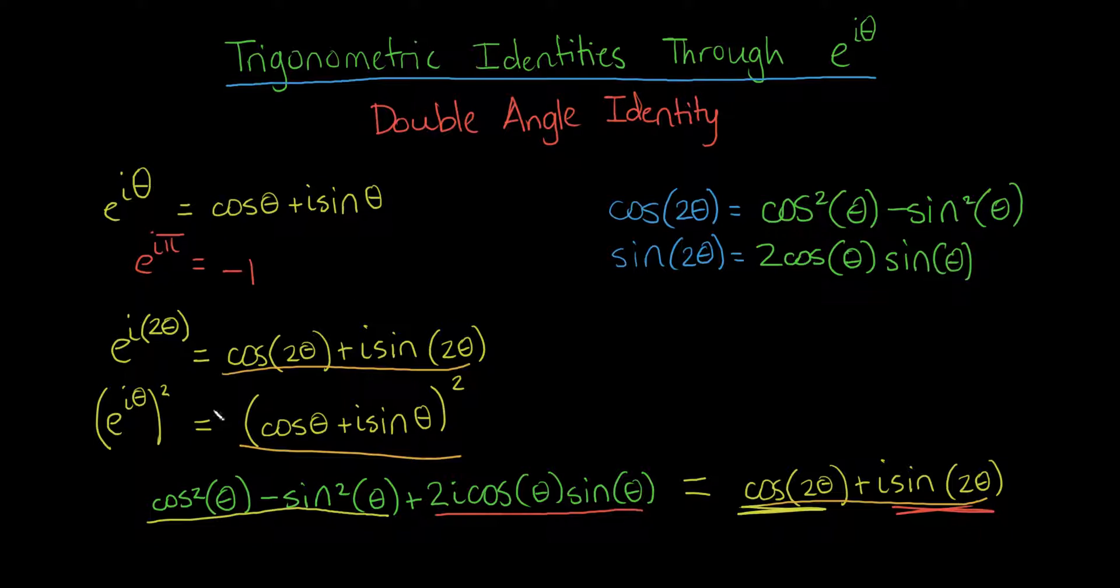And amazingly, a simple method, from Euler's equation, e to the i theta equals cosine of theta plus i sine of theta, the application of this incredible connection of trigonometry to complex numbers and to exponentiation, has brought us to the double angle identity. In the next video, we're going to do the same thing, but for the angle sum identities. Thank you.